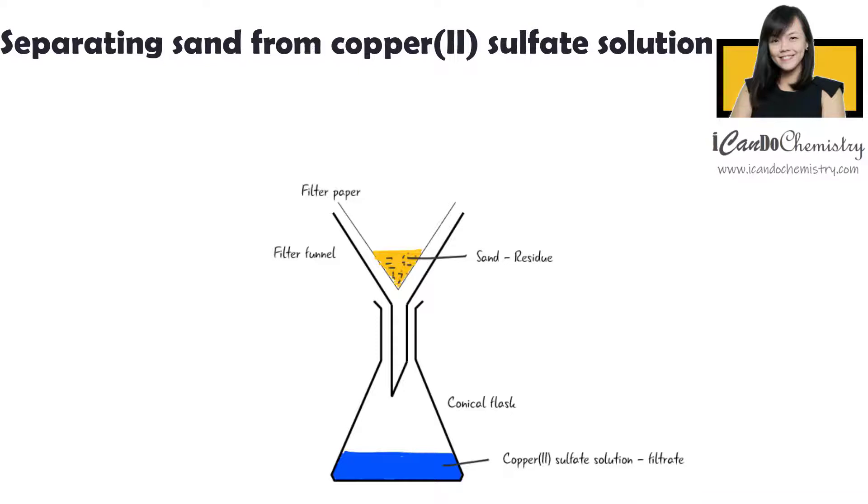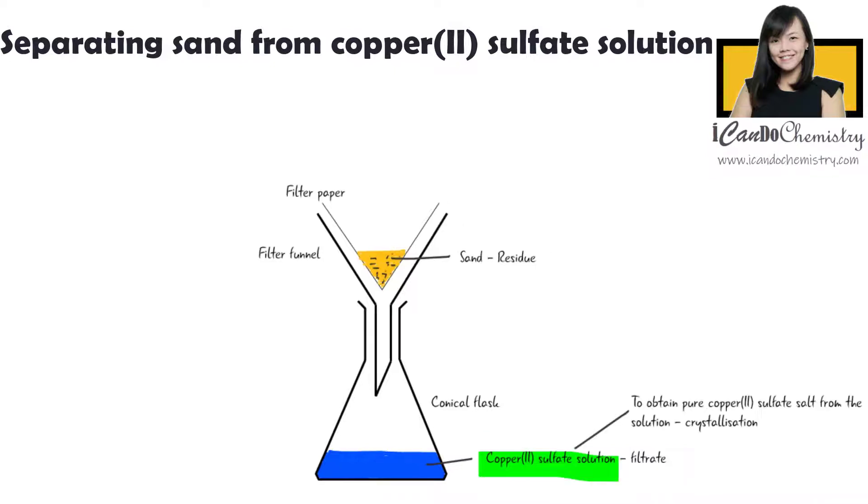We know that many salts are soluble in water. Copper-2-sulfate salt is one of them. To obtain the pure salt from the solution, we carry out crystallization. Crystallization is a physical method used to separate a soluble salt from a liquid.